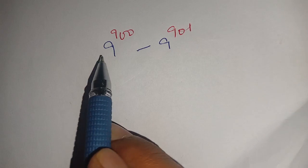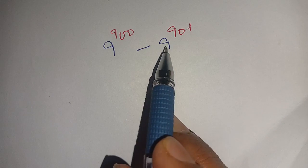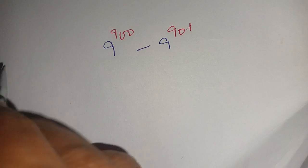Everyone, in today's video we are going to simplify this problem: 9^900 - 9^901. Let us solve this.